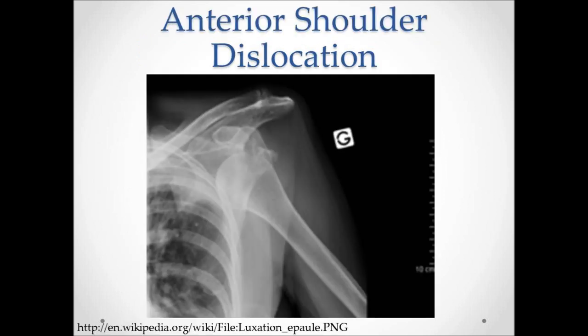The next slide shows a picture of an anterior shoulder dislocation. You can see the glenohumeral joint and the head of the humerus is no longer articulating with that glenohumeral joint. This would be an anterior shoulder dislocation.